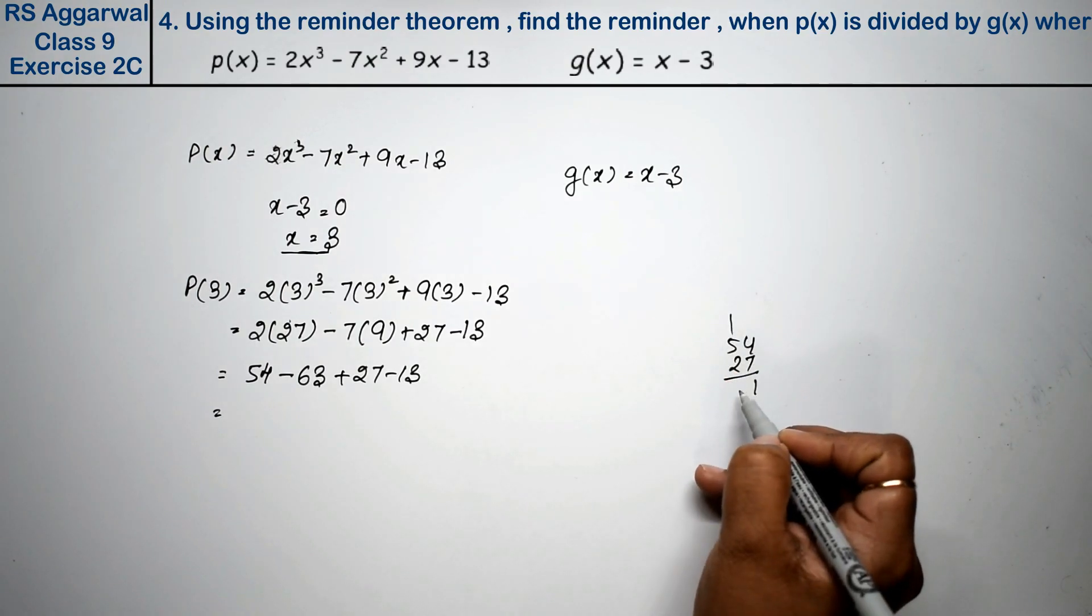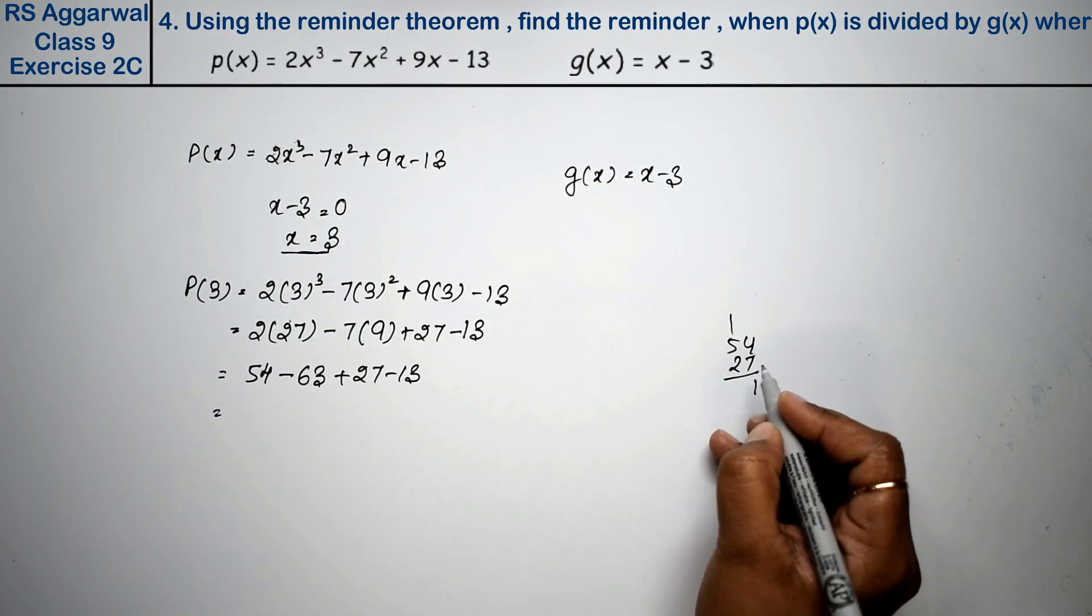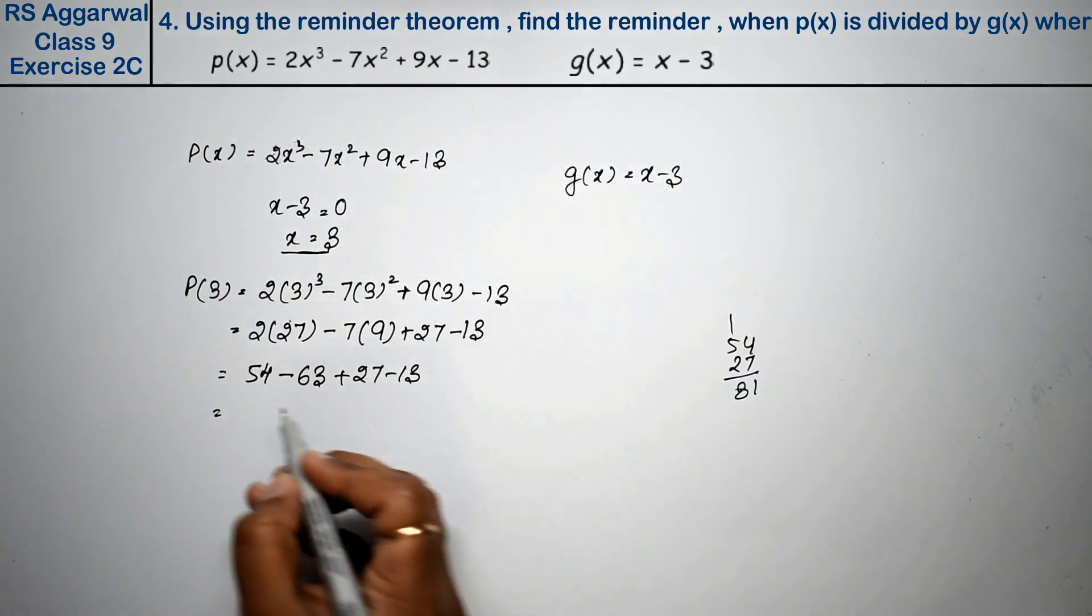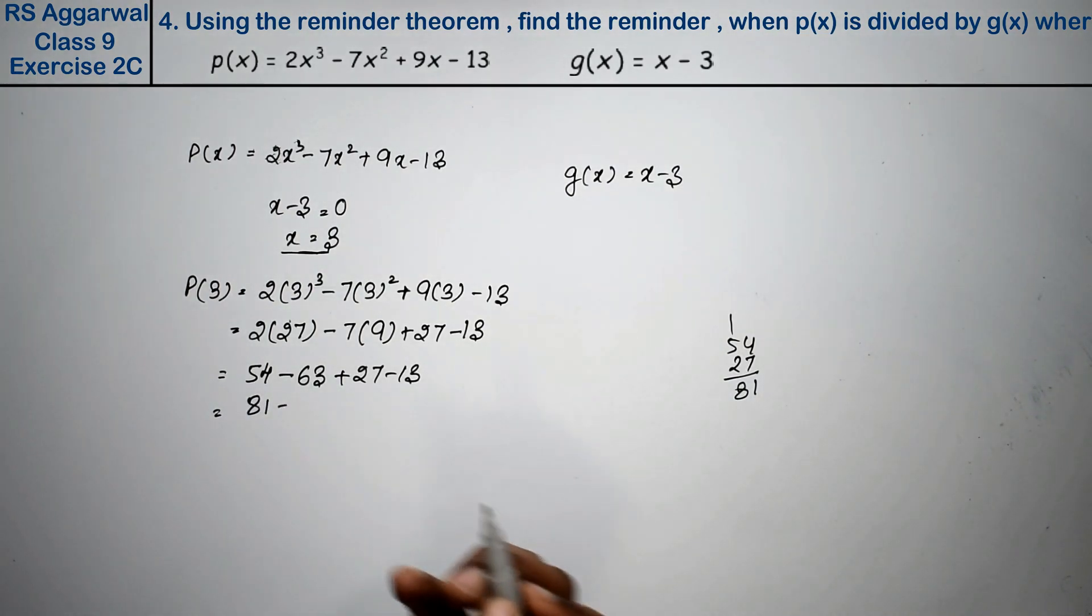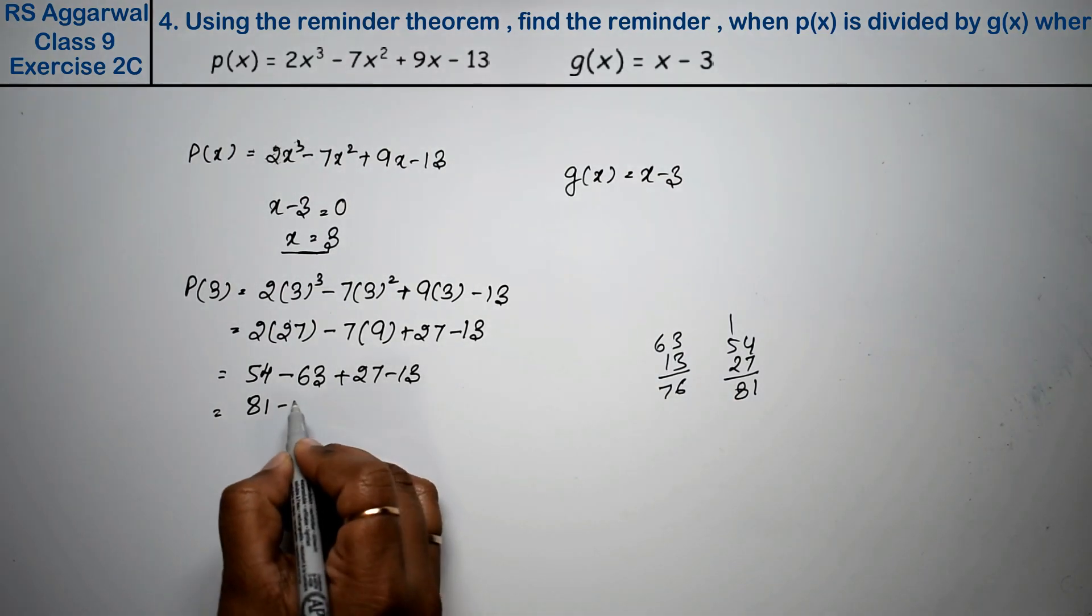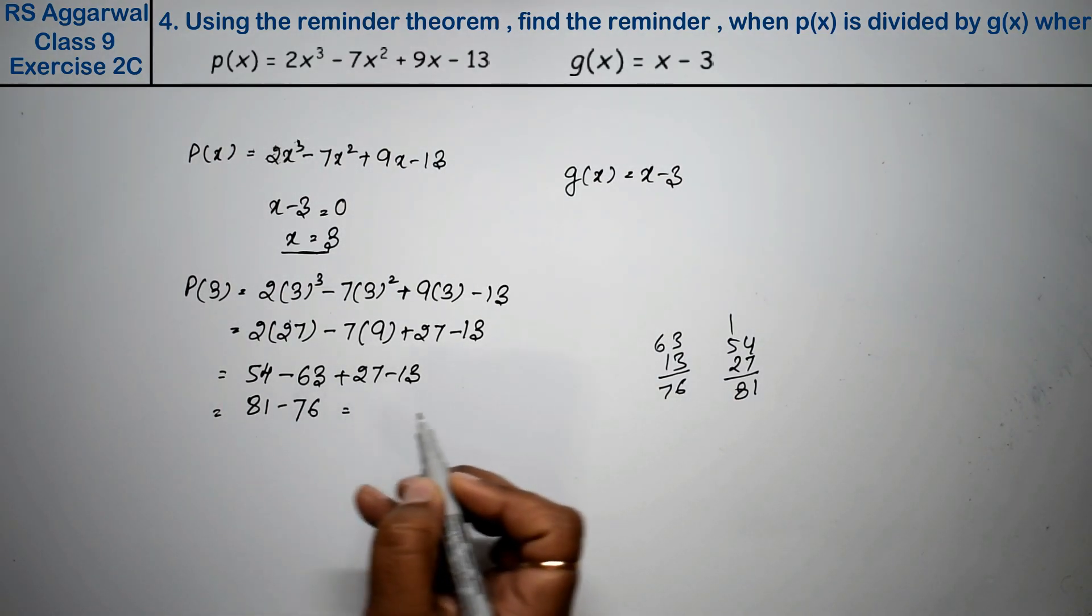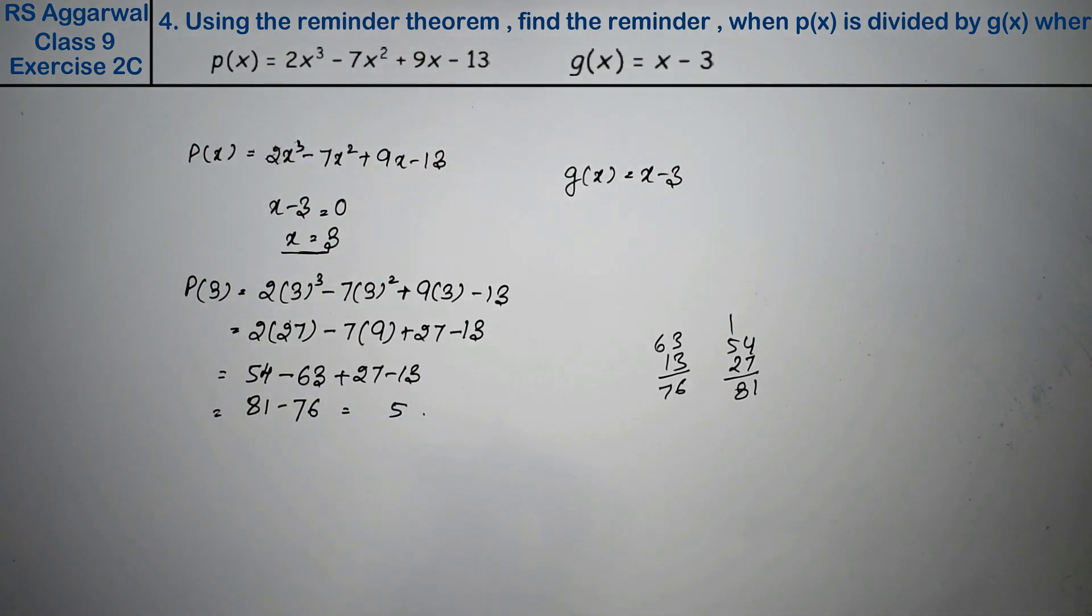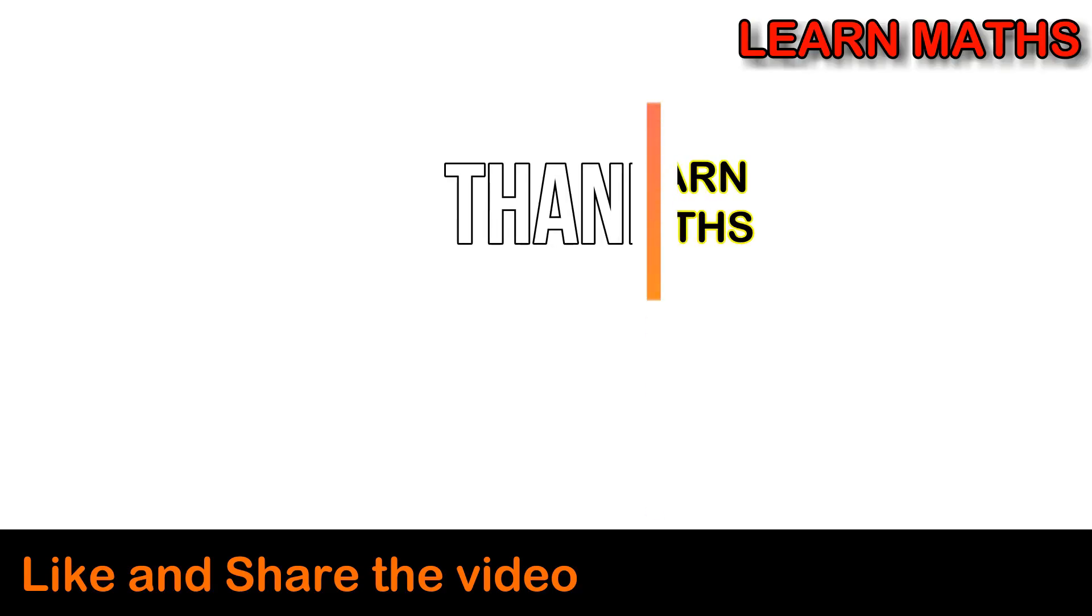Now we calculate: 54 minus 63 equals negative 9, plus 27 equals 18, minus 13 equals 5. So the answer is 5.